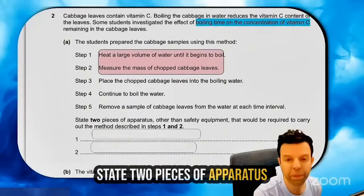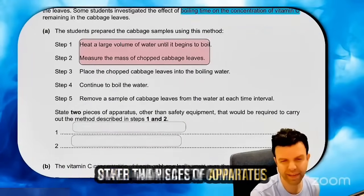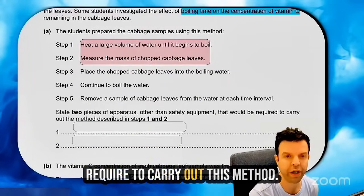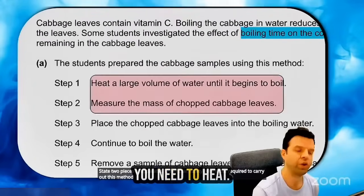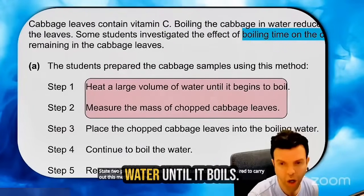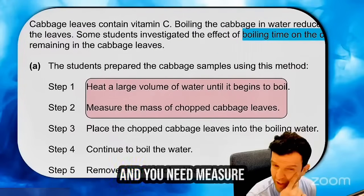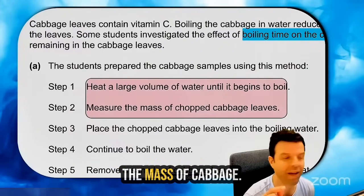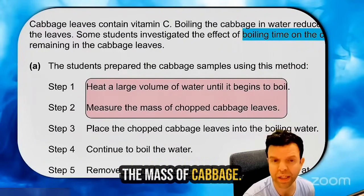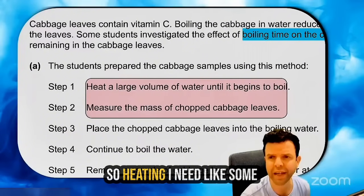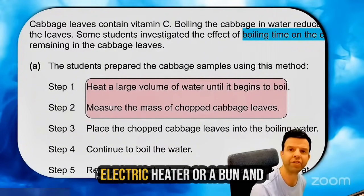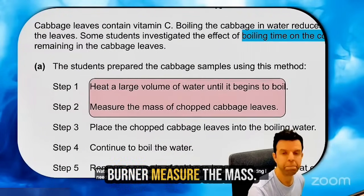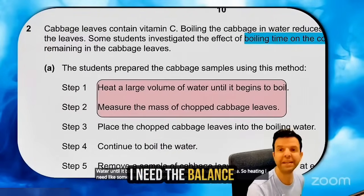State two pieces of apparatus other than safety equipment required to carry out this method. You need to heat water until it boils — so you need an electric heater or a Bunsen burner — and you need to measure the mass of cabbage, so you need a balance.